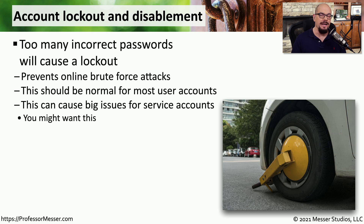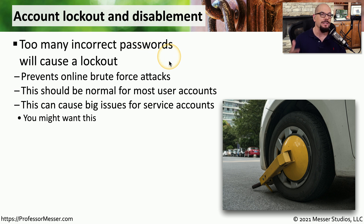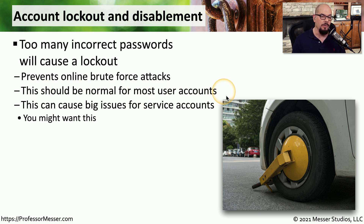One way to prevent an attacker from using a live system to perform a brute force attack is to implement an account lockout policy. This means that after a certain number of incorrect passwords, the account is automatically locked. Even if the attacker eventually finds the correct password, the system has already locked that account and made it inaccessible. This is undoubtedly the norm for most organizations, ensuring that no one is performing a brute force attack on their live systems.